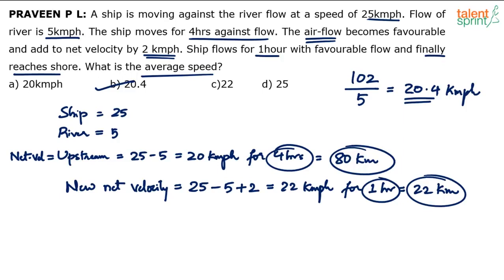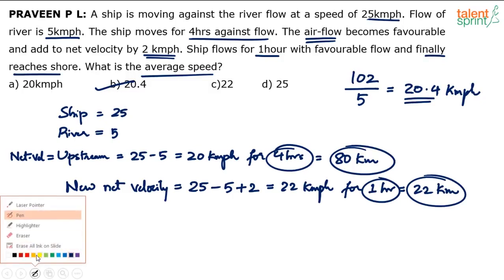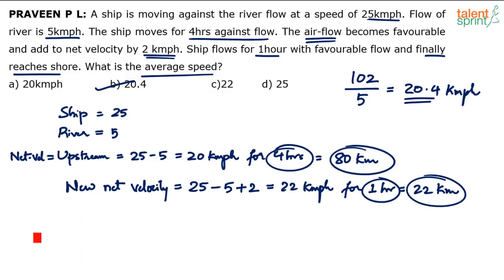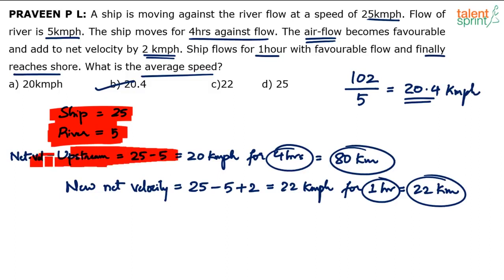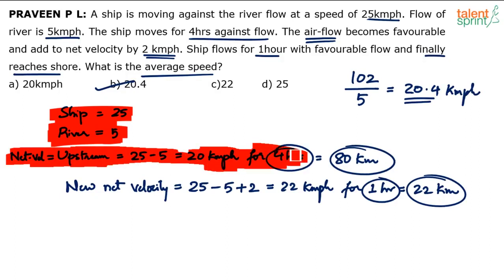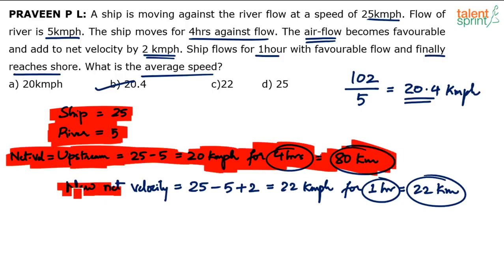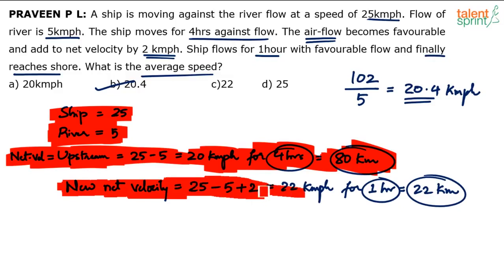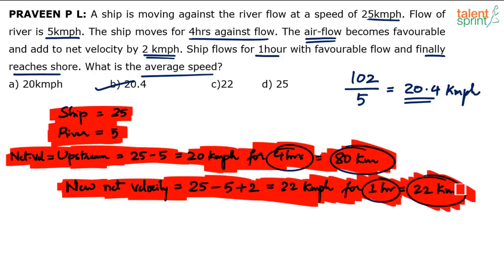This is very simple — you should be able to solve this question mentally. Most of the steps written here can be avoided in the exam. Upstream speed is directly 20 km/h, and 20 km/h for 4 hours is obviously 80 kilometers. Then the new net velocity is 20 plus 2 equals 22 km/h for 1 hour is 22 kilometers. Total distance is 80 plus 22 equals 102, total time is 4 plus 1 equals 5, and 102 by 5 is 20.4.